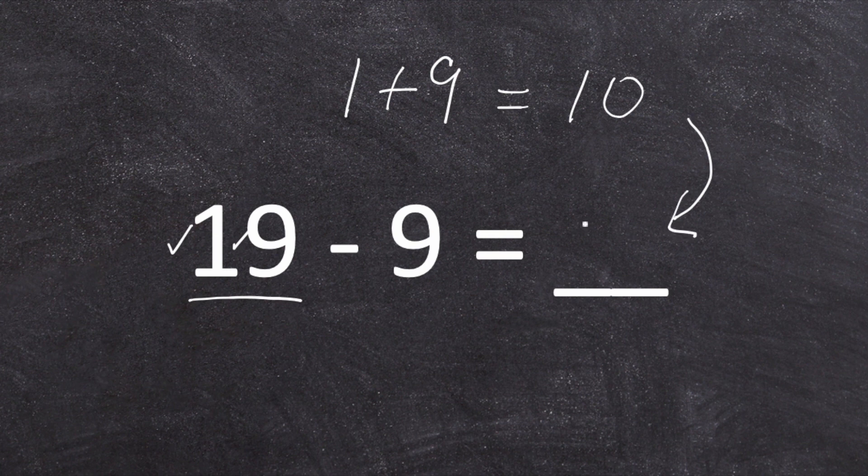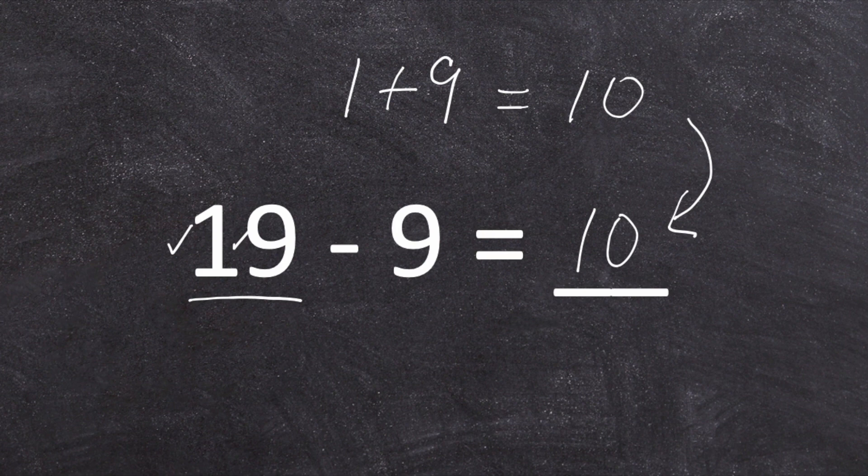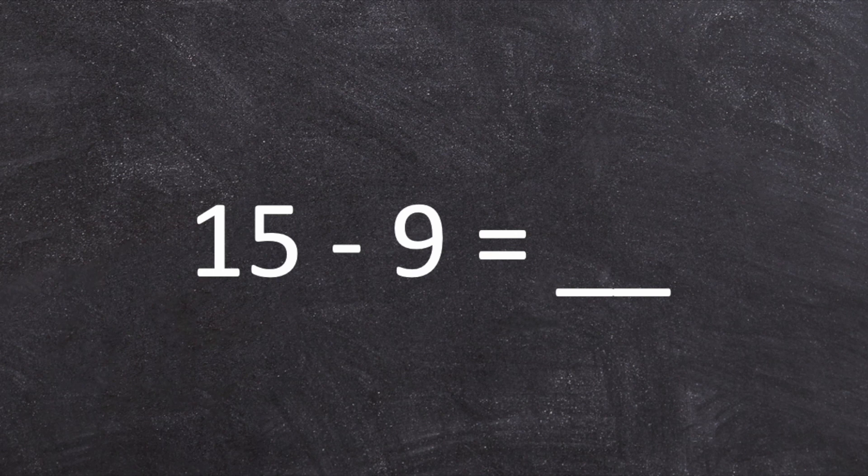There's the answer to our subtraction sentence. Nineteen minus nine equals ten. And we're going to try this with one more.